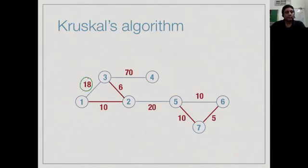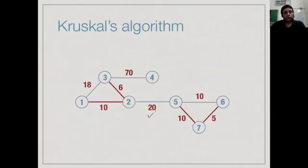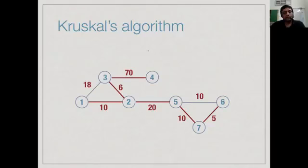We have now finished the 10s. The next edge is 18, but adding it would form a cycle, so we discard it. We go to the next edge, which is 20, and add it. We have added 1, 2, 3, 4, 5 edges and we need 6 because we have 7 vertices totally — we need n minus 1 edges. The only edge left is the 70, so we add that and we are done. This is the spanning tree formed by Kruskal's algorithm; we scanned through all the edges and dropped a couple along the way.